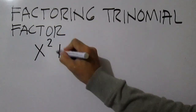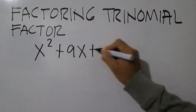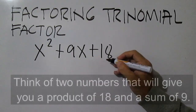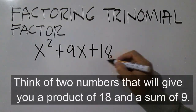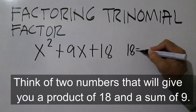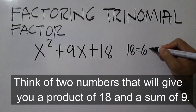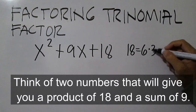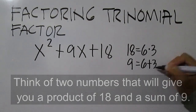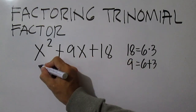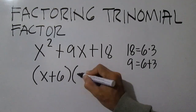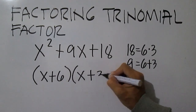Factor x squared plus 9x plus 18. To factor, just think of two numbers that will give you a product of 18 and a sum of 9. 18 is equal to 6 times 3. 9 is equal to 6 plus 3. The factors are x plus 6 and x plus 3.